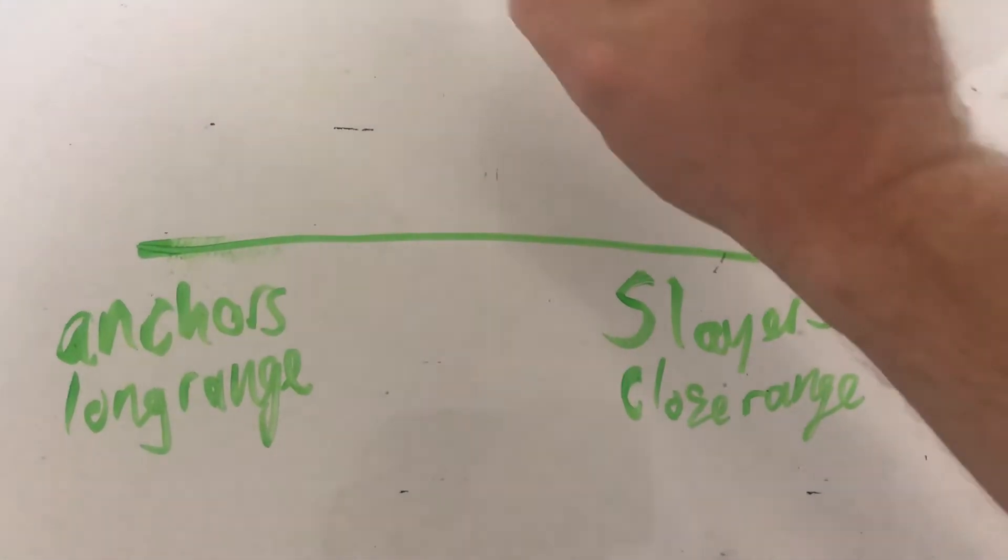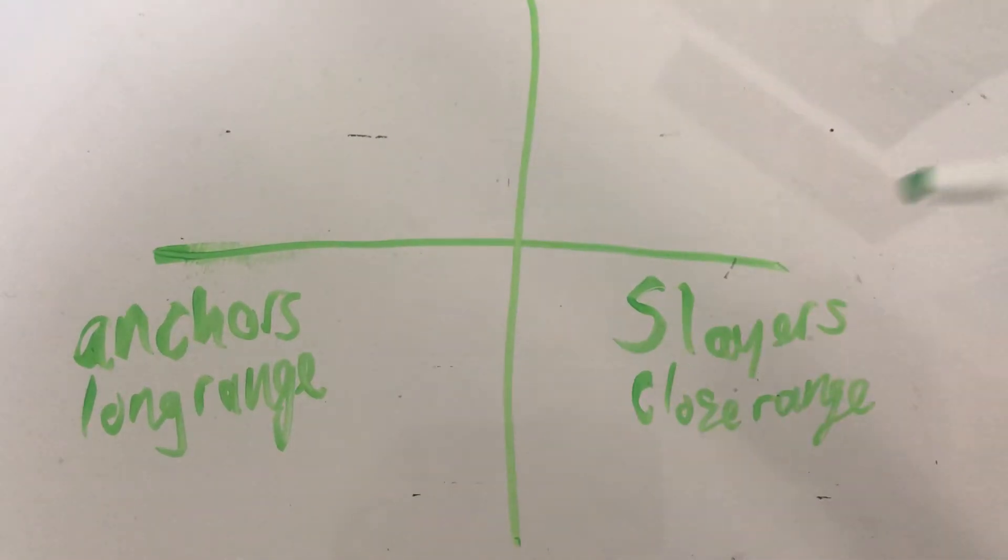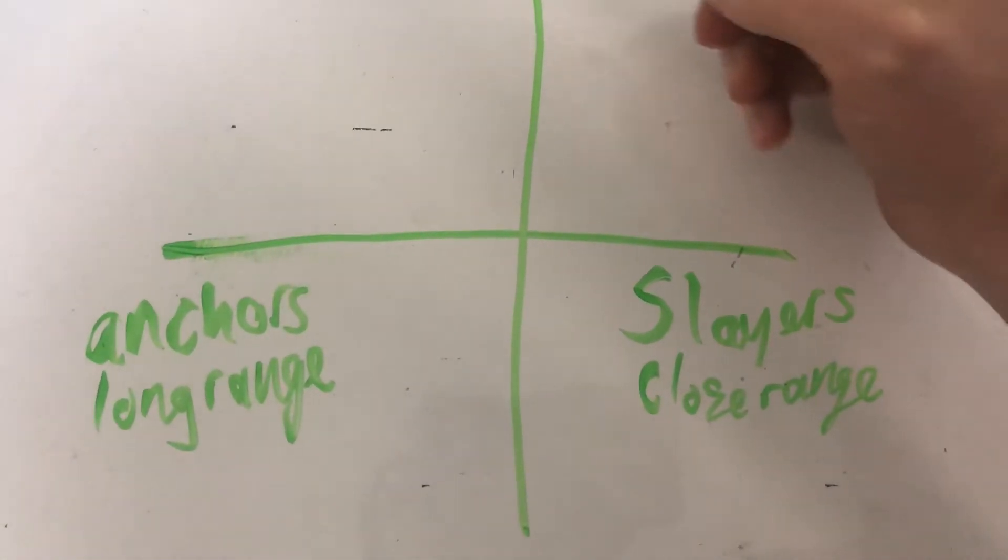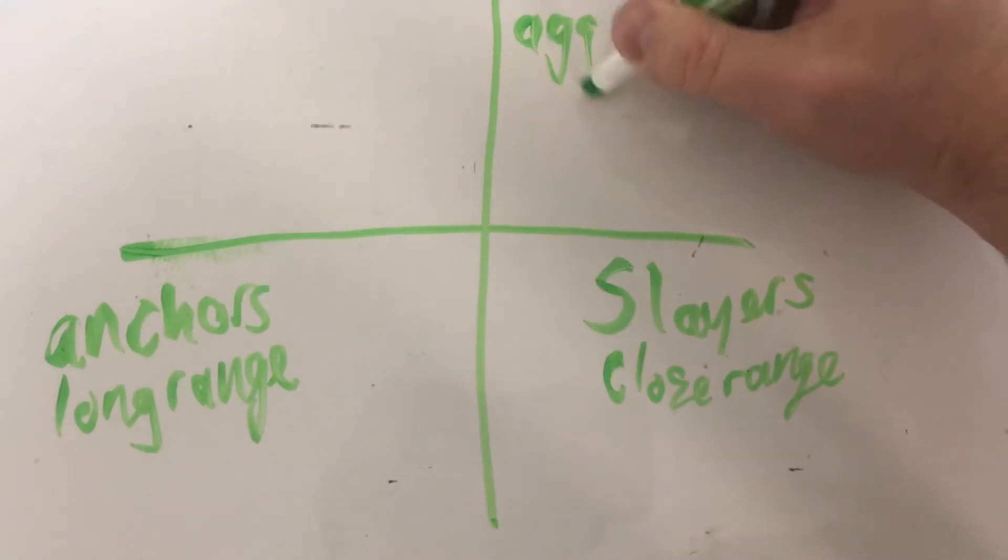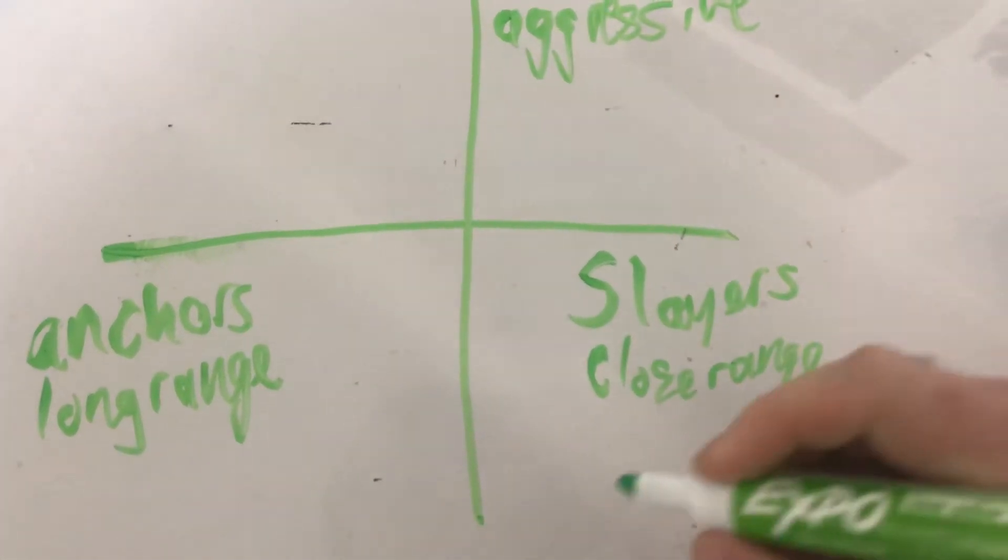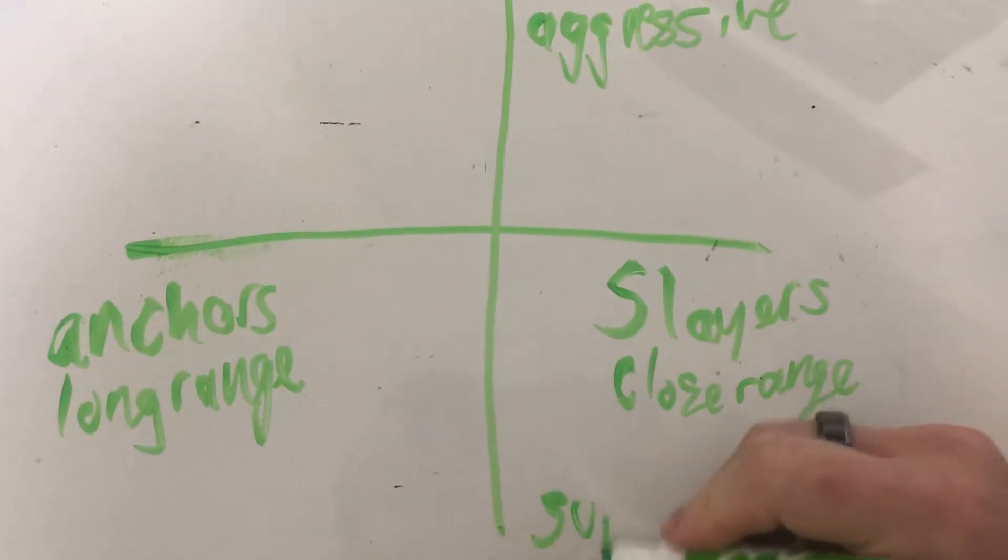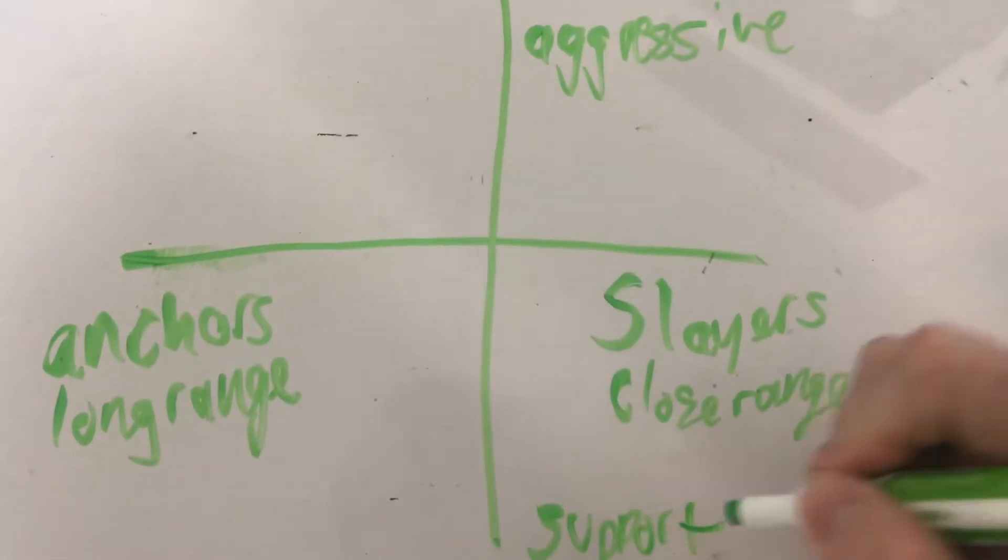But then there's a second axis, and that is you have your aggressive and then your more support.